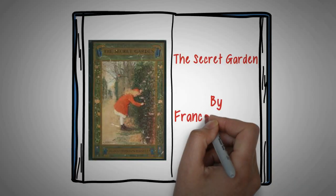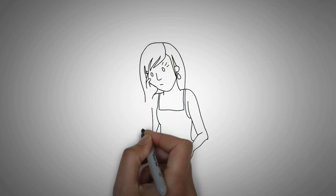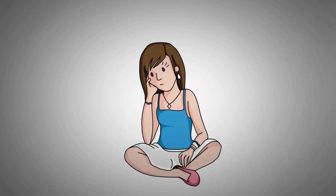The Secret Garden by Frances Hodgson Burnett. Mary Lennox is an unwanted child living in India with her parents.